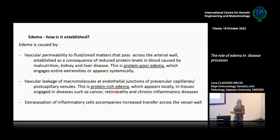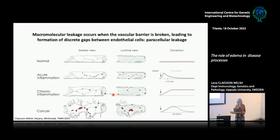I will talk about protein-rich edema, which occurs in local tissue engaged in diseases such as cancer, retinopathies, or chronic inflammatory conditions, and extravasation of inflammatory cells. Inflammation is often accompanying both types of edema, especially when they become chronic. Protein-rich edema requires endothelial junctions to partially dissociate. Normally, in a healthy organ, blood vessel junctions are sealed, permeability is low, and blood does not leak through the vessel wall into the tissue.